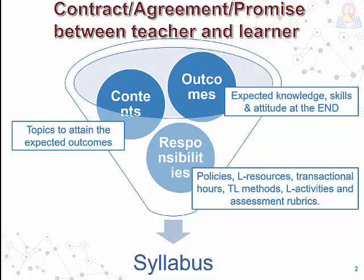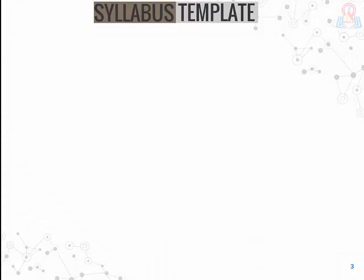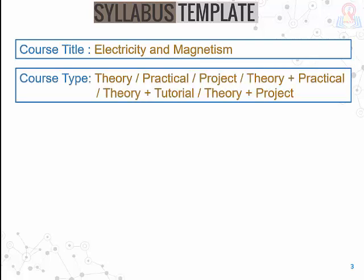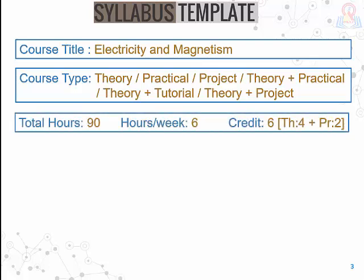Let us see something about the outcomes first. Before writing a syllabus we must understand this template. The first important element is the course title — for example, Electricity and Magnetism for a physics course. Then you have to describe the type of course: theory, practical, project, theory plus practical, theory plus tutorial, or theory plus project. The next important thing is the total hours allotted and the hours per week — say six hours per week, giving a credit of six.